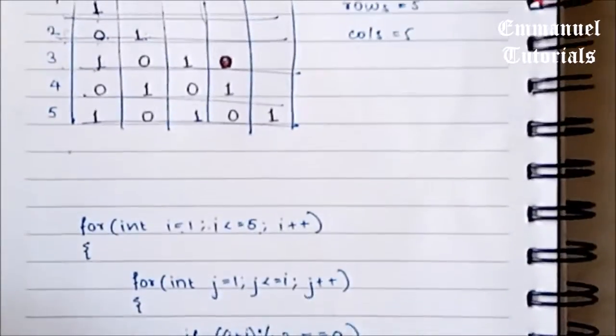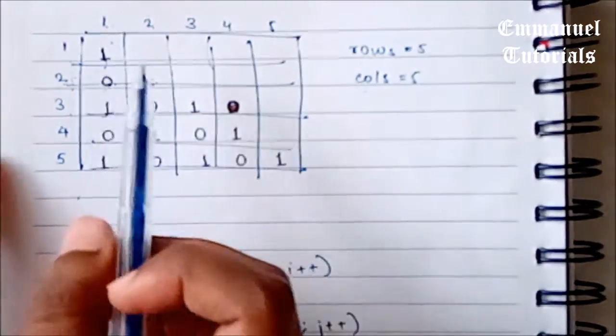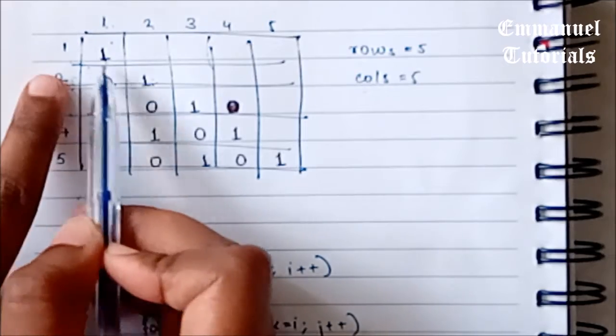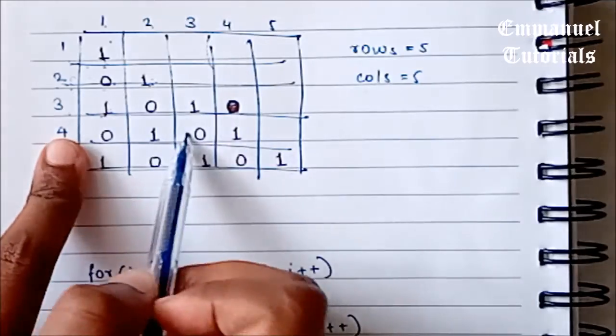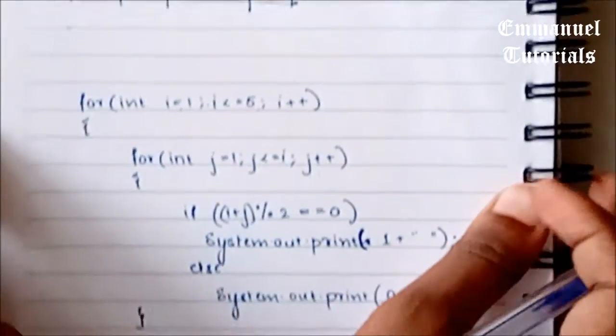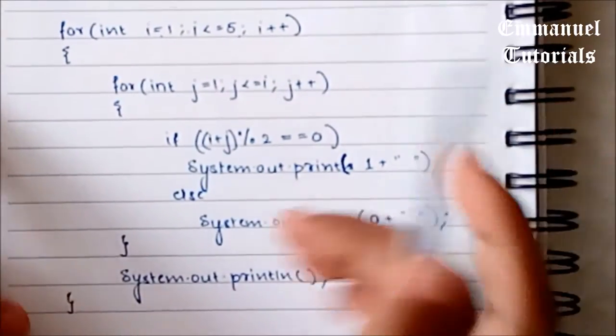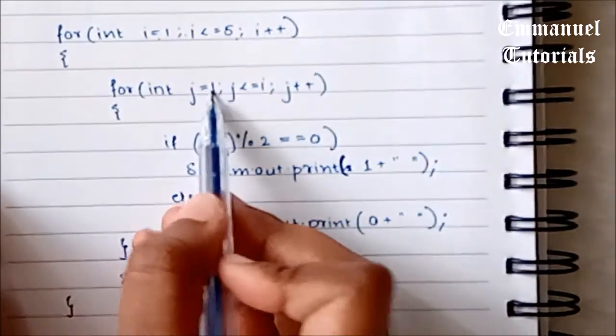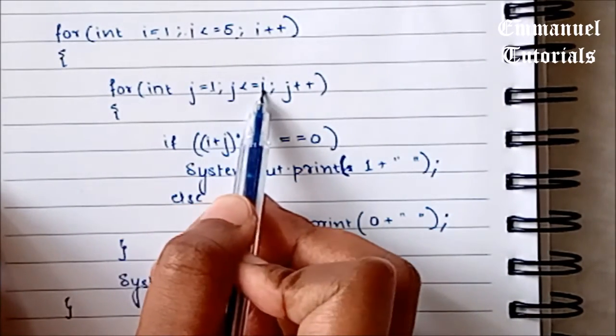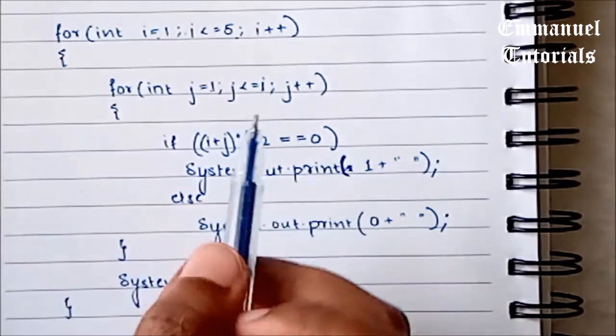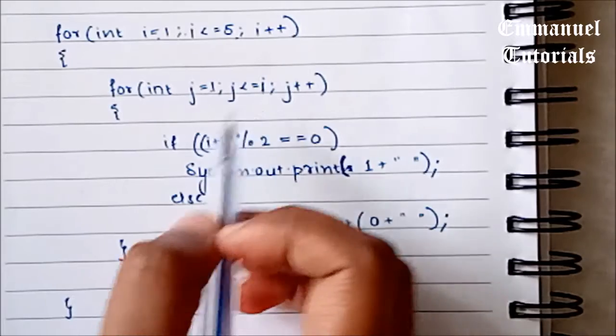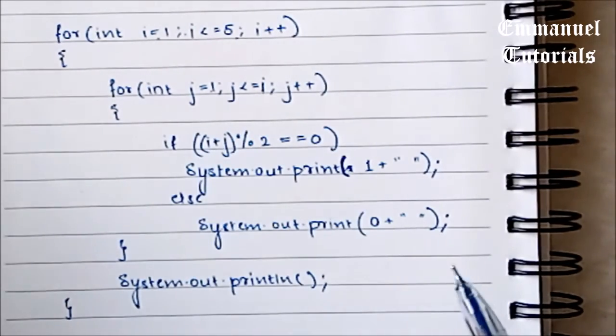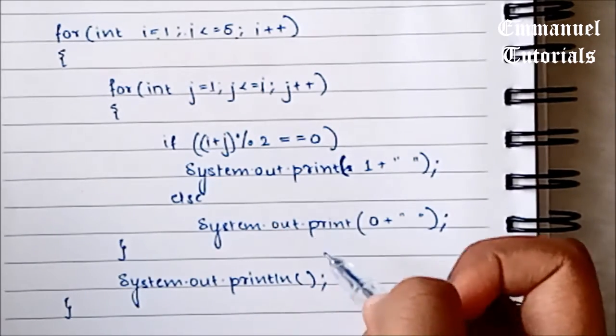And one more relationship that we need to find is that for the row number 1, there is 1 column. For row 2, there are 2 columns. For row 3, there are 3 columns and so on. So if we see the inner for loop, it is beginning from 1 and it is going up to i, which is the row number. That means at each row, the total number of columns is i. That's the reason we have written this loop. And how do we determine the next number? That is the logic that we have to write inside the loop.